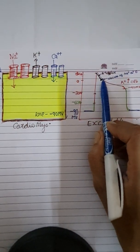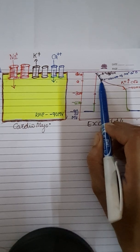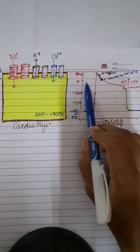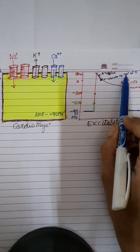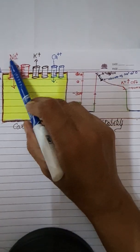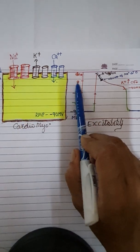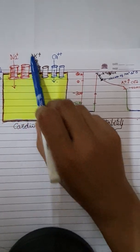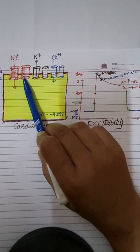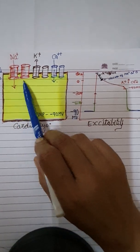It reaches up to the level of zero potential. Then there occurs closure of sodium channels. At the zero voltage, there is closure of the sodium channel and the sodium entry from the ECF gets stopped.